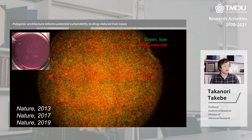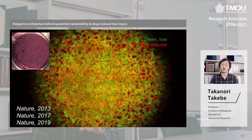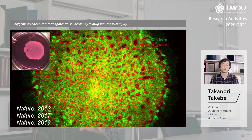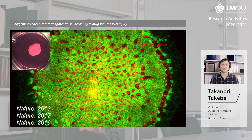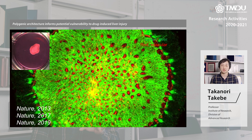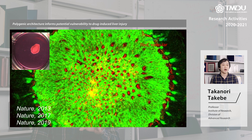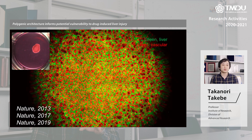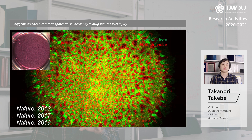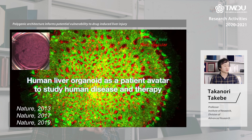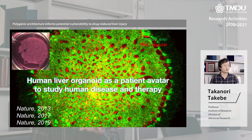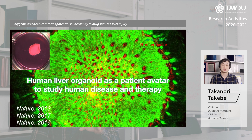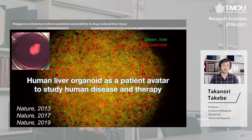In our laboratory we have developed multiple different liver organoid platforms where we can generate organized liver structures in a petri dish. For example, this movie illustrates the blood vessel network formation in our liver organoid system. Because of these technologies, we are now able to study human-specific disease conditions, such as drug-induced liver damage.